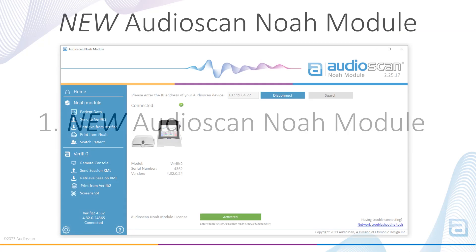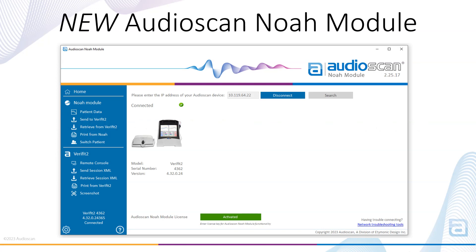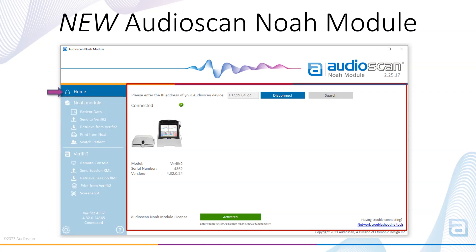The AudioScan NOAA module has a new user interface for optimizing workflow and ease of use. The Home tab is where you go to set up your AudioScan to PC connection. The AudioScan device IP address and the license key are entered in the Home section of the module. Once successfully connected and the license key has been entered and reads activated, the full module functionality will be available.